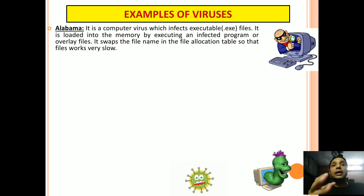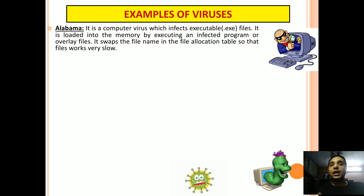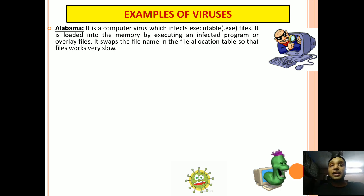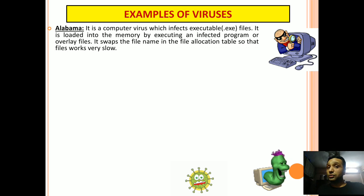Alabama is a computer virus which infects executable files, that is files with the extension .exe. It is loaded into memory by executing or running an infected file or program. It changes the file names and the file allocation table so that the file works very slowly, and gradually it stops working.